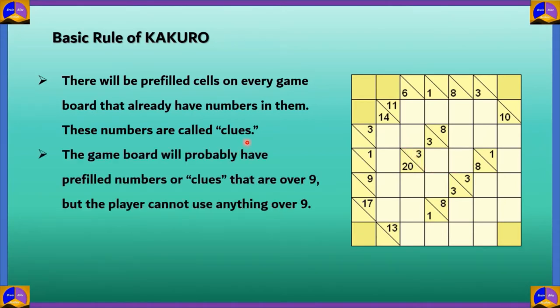The game board will probably have pre-filled numbers or clues that are over 9, but the player cannot use anything over 9. You have 14 in this vertical block, but you must use numbers from 1 to 9. You cannot use anything below 1 or above 9. We cannot use 0 in this game. Keep that in mind.